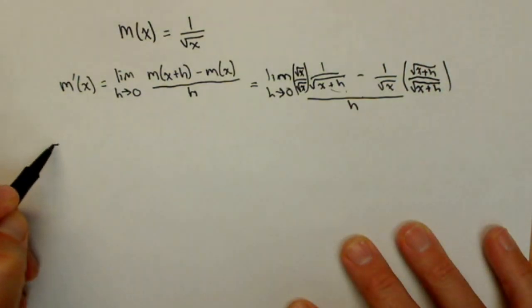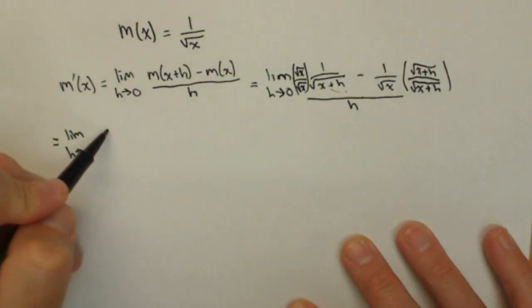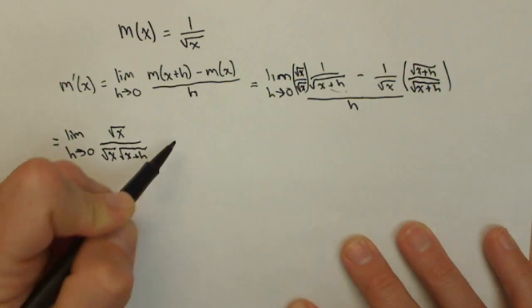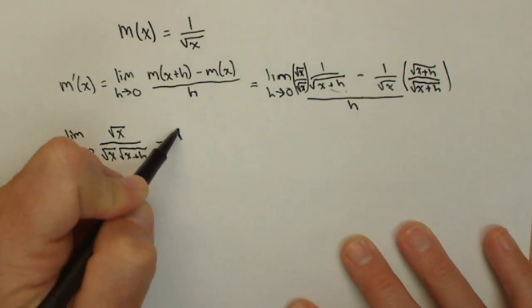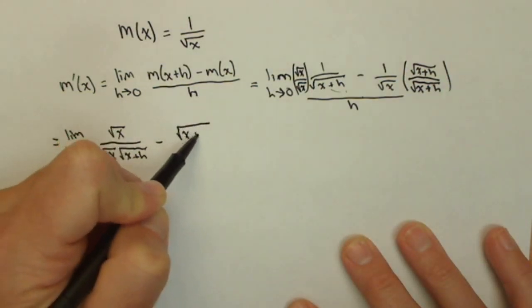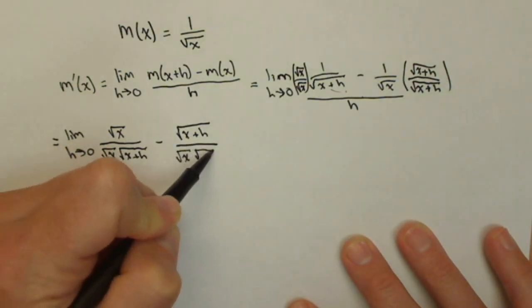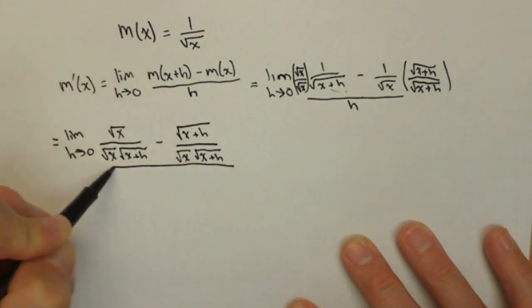So, let's see where we're at here. Now, we write limit as h goes to 0 every time until we've actually taken that limit. And I've got square root of x over square root of x times square root of x plus h minus square root of x plus h over square root of x, square root of x plus h. This whole thing is all over h.